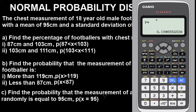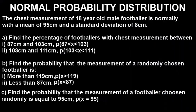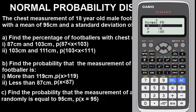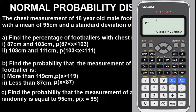Lastly, for Part C, we use Normal PD — not CD — because we are finding the probability at a single point, x = 95. Press Menu, then 7 for distribution, then select Normal PD and press 1. Our x value is 95. Our standard deviation is 8 and our mean is 95. Press OK to get the result. This is the value when x equals 95.